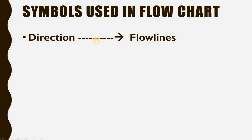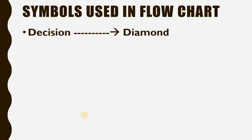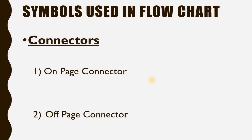Next we use flow lines to show or represent the direction of flow. A flow line has a line with an arrowhead — we can use downward, upward, right, or left arrow lines. Then we have the diamond symbol to show the decision step. For connectors, there are two types: the on-page connector represented as a circle, and the off-page connector represented as a pentagon.